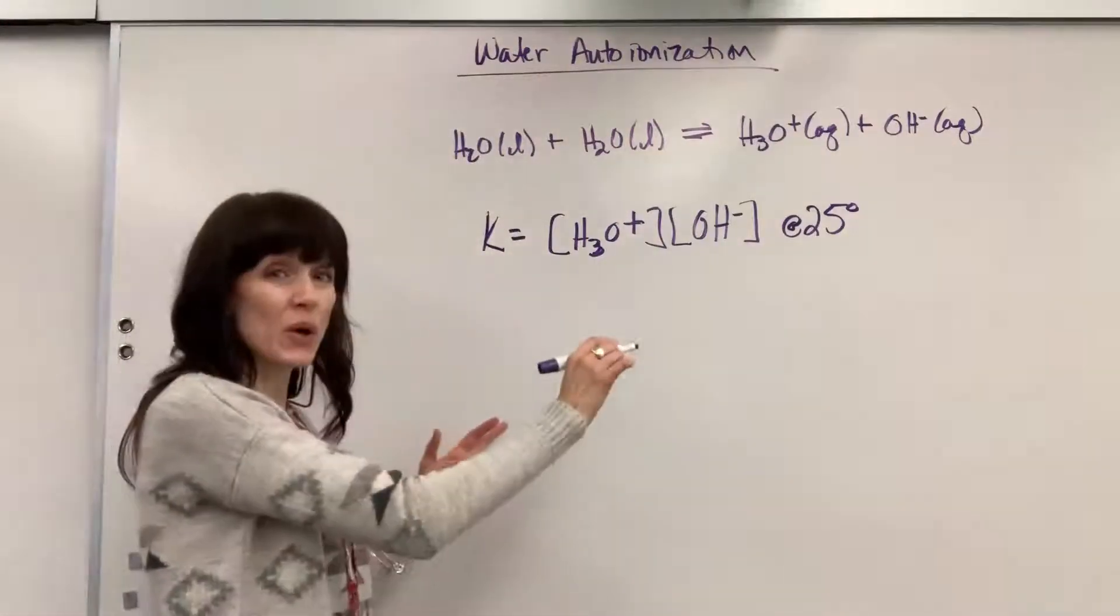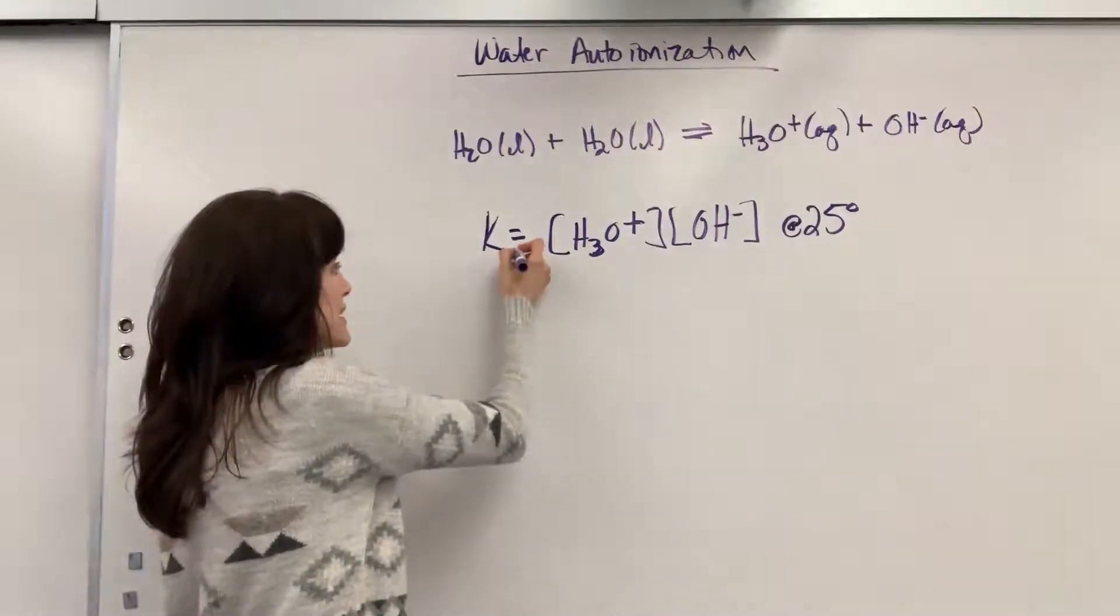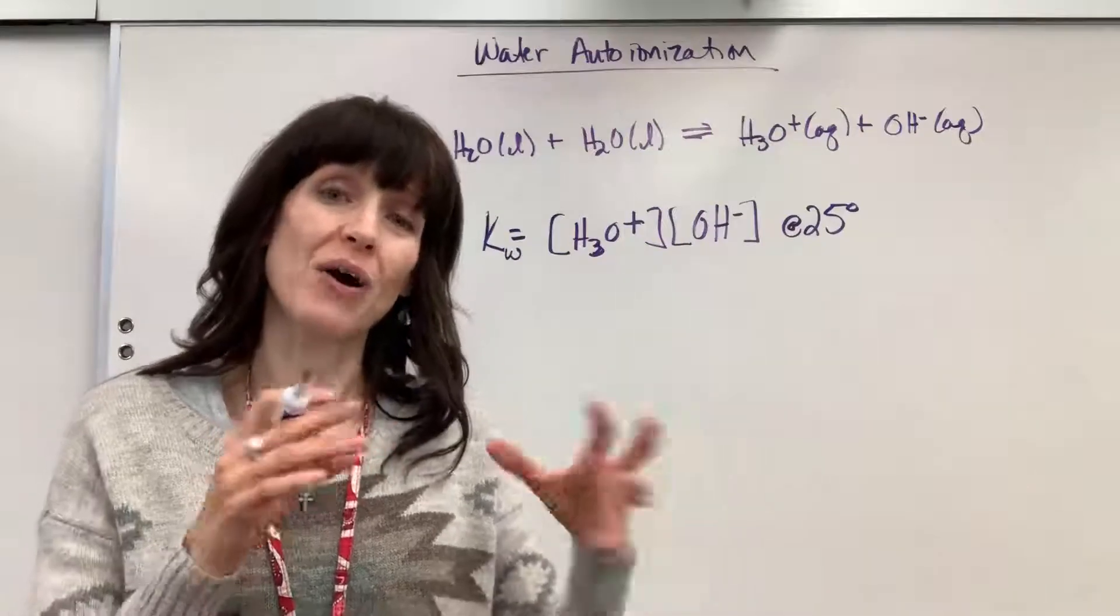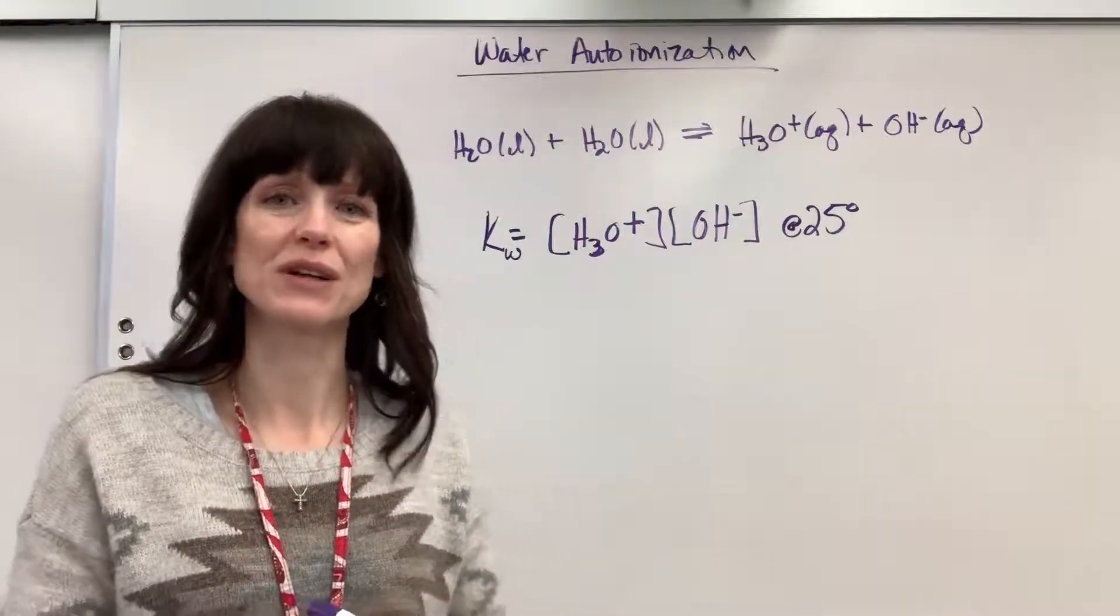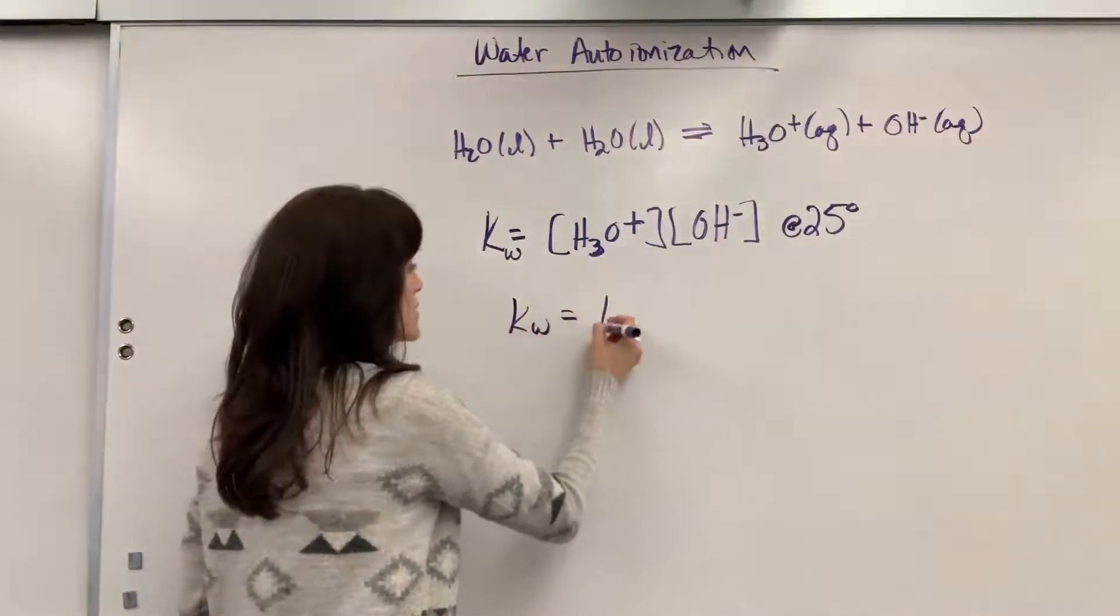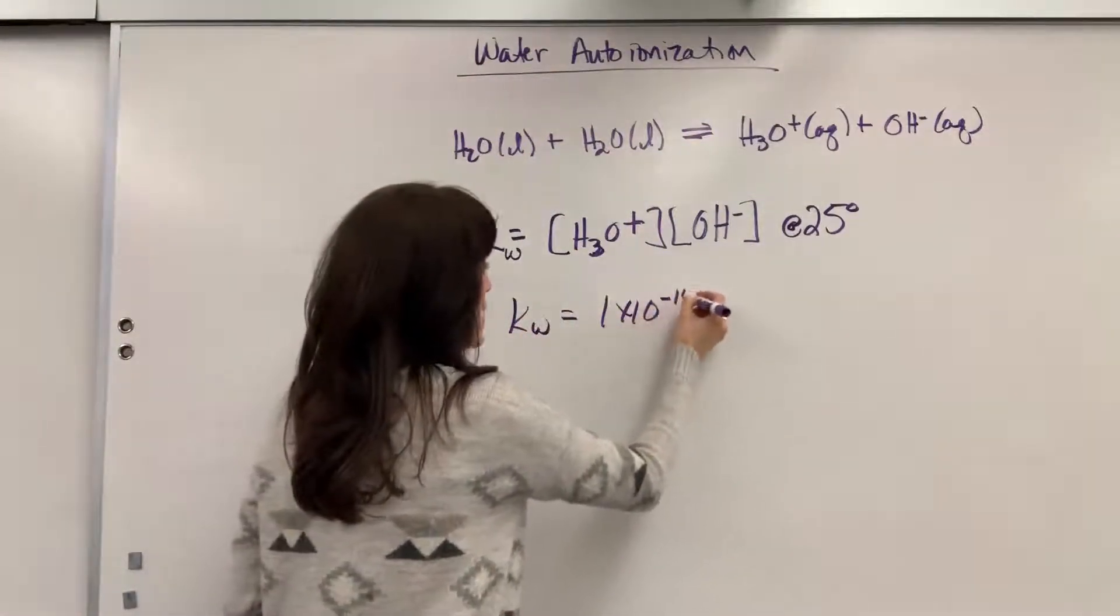K, because this is so special for water, gets its own subscript, K-W. It's the equilibrium expression for this auto-ionization, the self-ionization of water at 25 degrees C. And the value for this is always 1 times 10 to the minus 14.